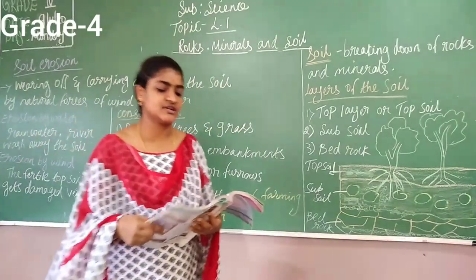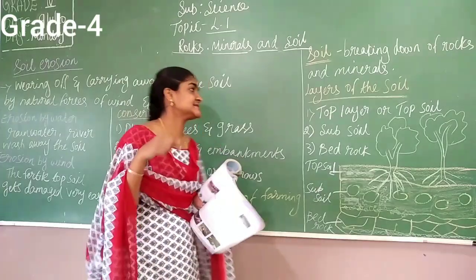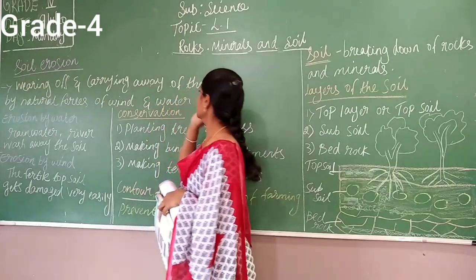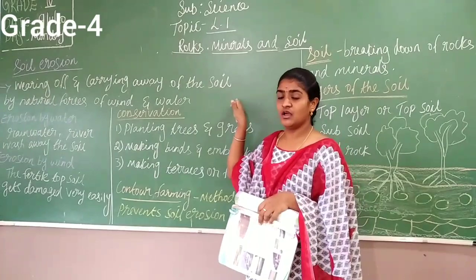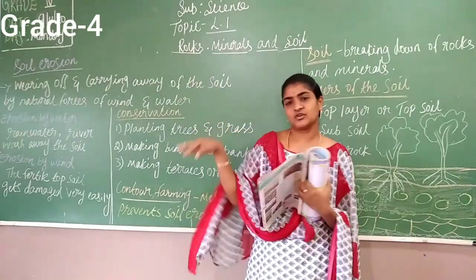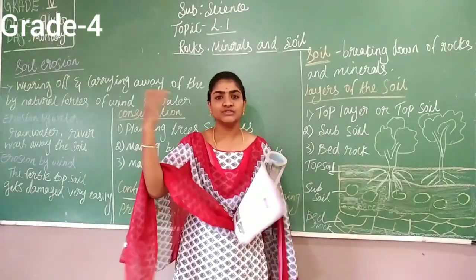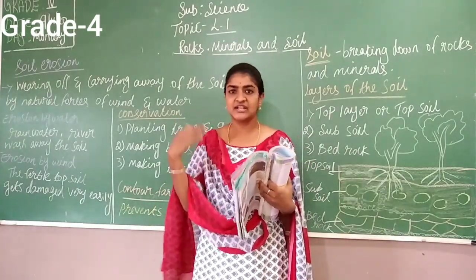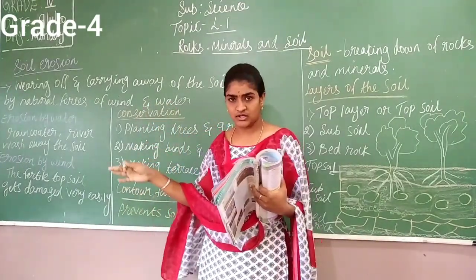Next we are going to see soil erosion. What is soil erosion? Erosion means wearing off or carrying away the soil. Whenever there is rainfall, on roads we can see that the soil and sand won't stay — through the force of water, it takes all the sand and soil, and even dust and waste particles, and carries them away with the flowing water.